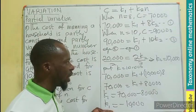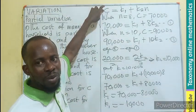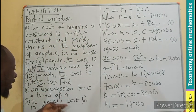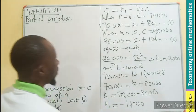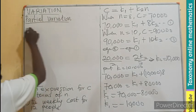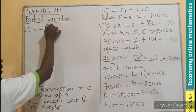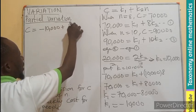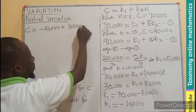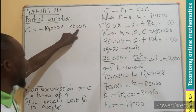Now we can substitute both k1 and k2 into the original expression for C in terms of n. So by substitution, we have C equals k1, which is minus 10,000, plus k2, which is 10,000 times n.